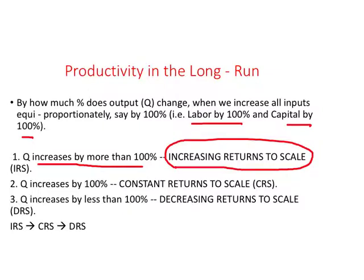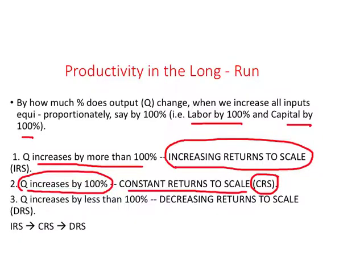Another possibility: when you increase labor and capital each by 100% and output increases by exactly 100%, there is no change in productivity — this is called Constant Returns to Scale, abbreviated as CRS. A third possibility is when output increases by less than 100% when all inputs are doubled, indicating a decrease in total factor productivity — this is called Decreasing Returns to Scale, or DRS.